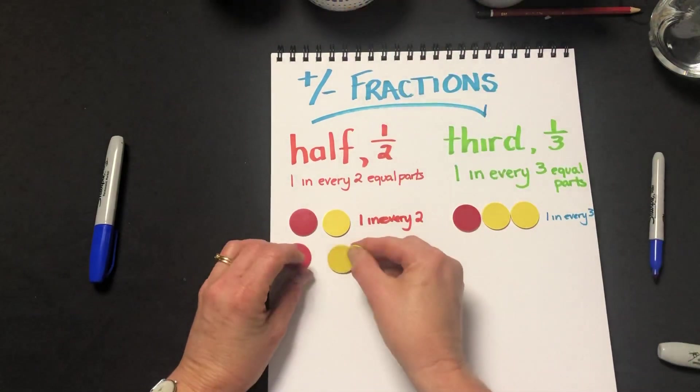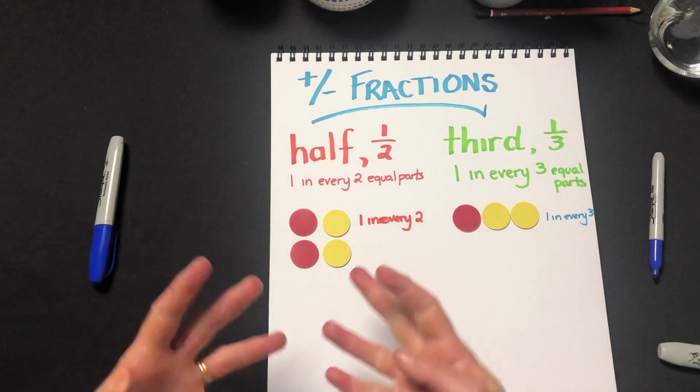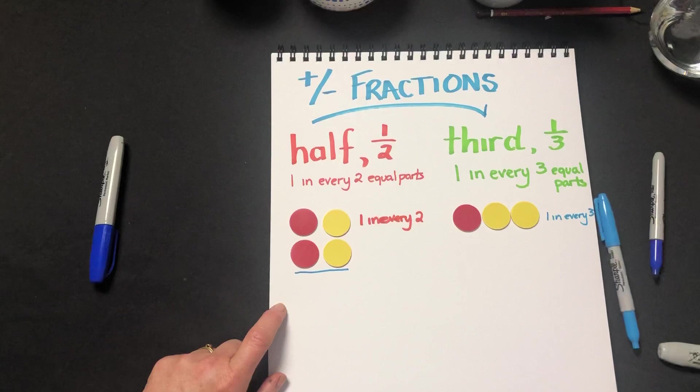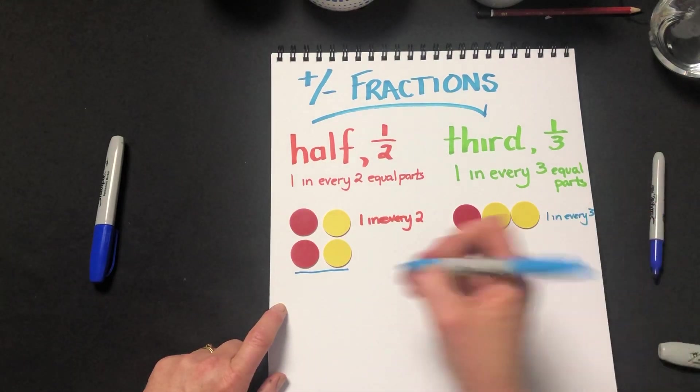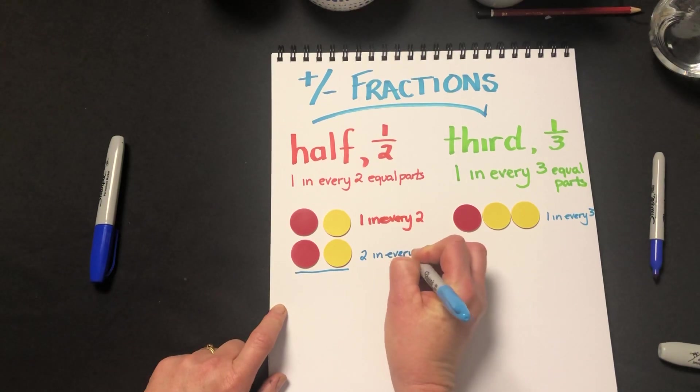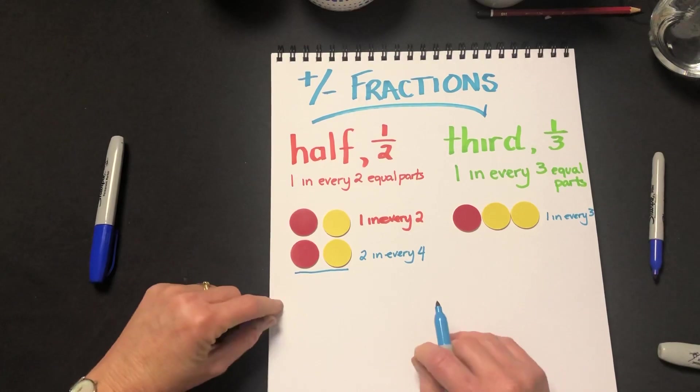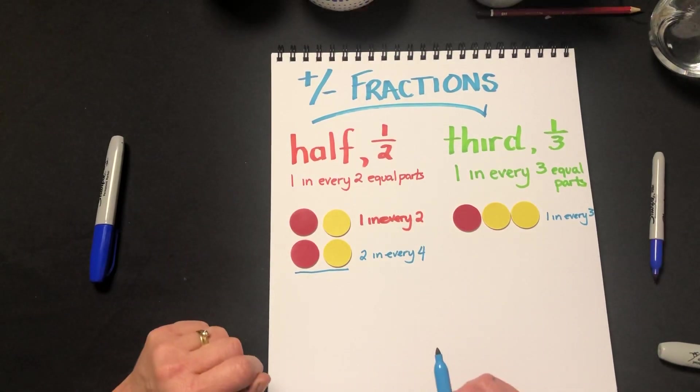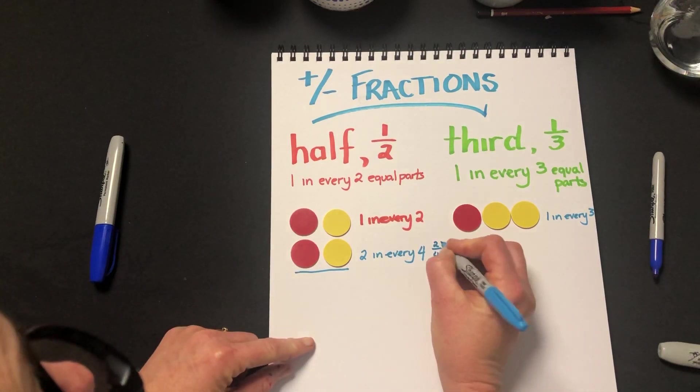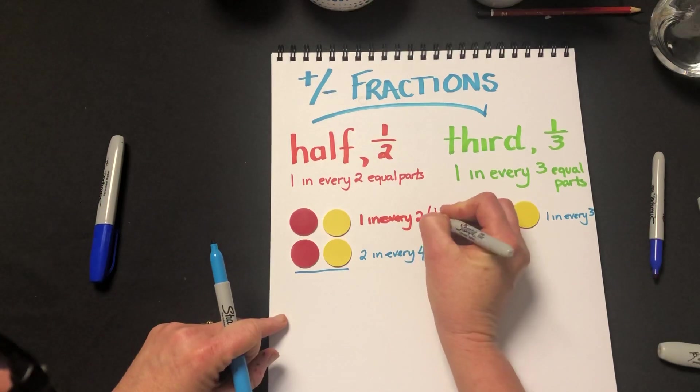But what we can do is represent a half with a larger collection, and this time you can see that two in every four counters are red, and that is equivalent to one in every two. So two quarters we know is the same as one half.